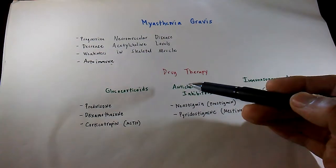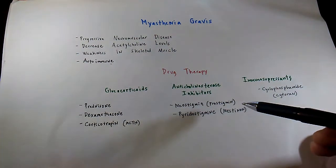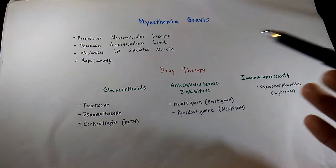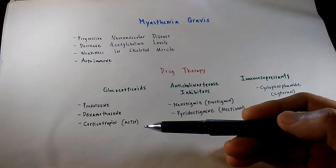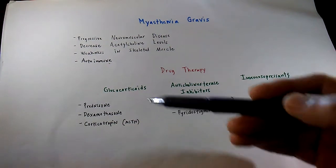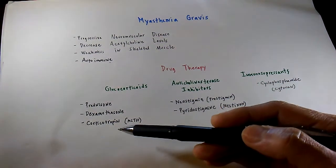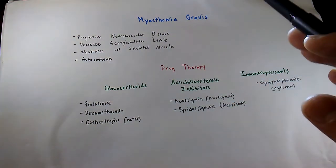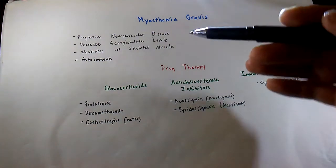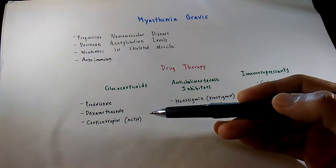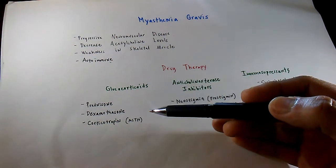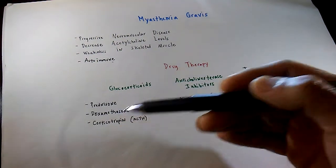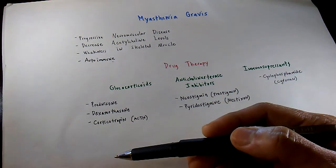Now, drug therapy. We do need to know the main three categories, which are glucocorticoids, anticholinesterase inhibitors, and immunosuppressants. The three main glucocorticoids that we will most likely encounter would be prednisone, dexamethasone, and corticotropin. What happens with glucocorticoids is basically they help cause reduction in inflammation. The two important side effects we need to take note of are hyperglycemia and adrenal insufficiency with our patient.